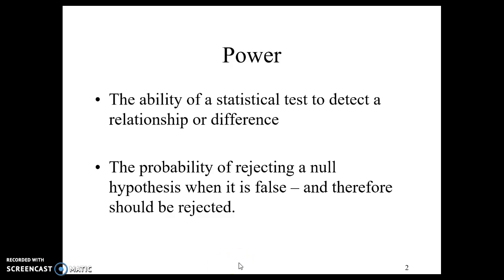This is the probability of rejecting a null hypothesis when it is false and therefore should be rejected. Can we say there is a difference or relationship based on our sample because it actually does exist in the population?